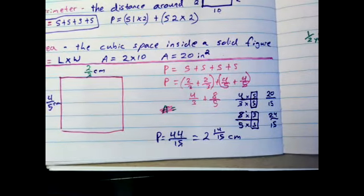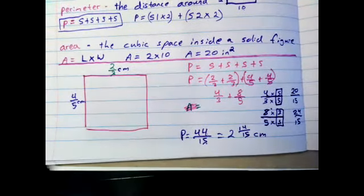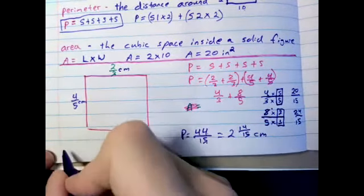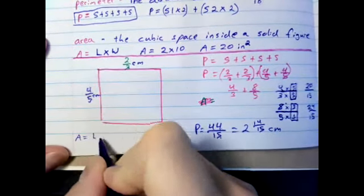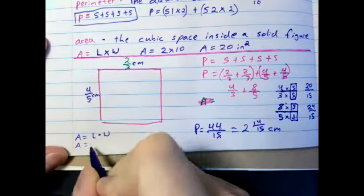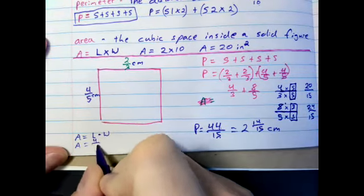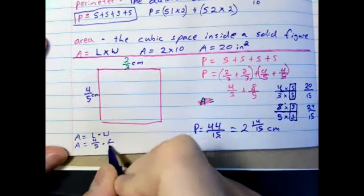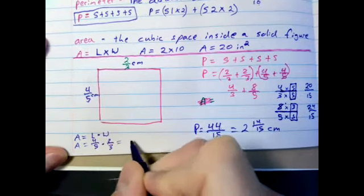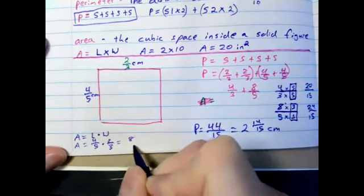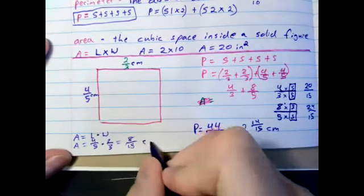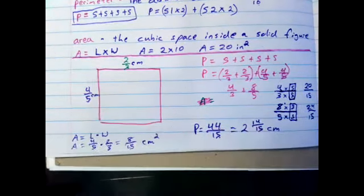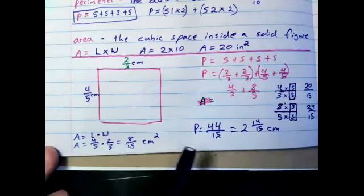Luckily our area is going to be much easier. Area: length times width. Area equals 4/5 times 2/3. 2 times 4 is 8, 5 times 3 is 15. So we can say it's 8/15 centimeters squared.